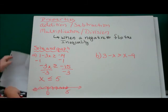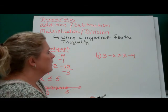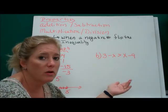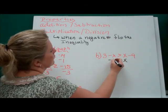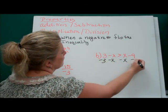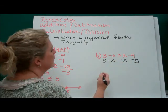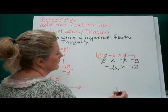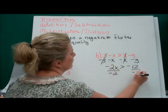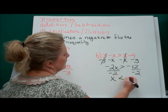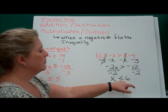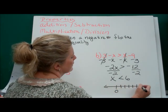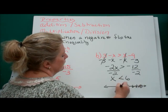Next one: we've got an x on either side. We can move terms across the inequality symbol just like we move across an equal sign. Subtract x from both sides, subtract 3. After cancellations, we've got negative 2x is greater than negative 12. We divide by negative 2 — flip the sign — leaving us with x is less than 6. Graph it: open circle at 6, shading everything less than 6.